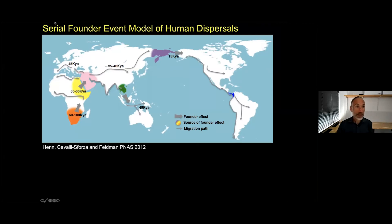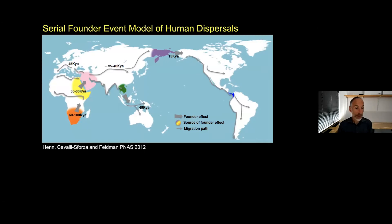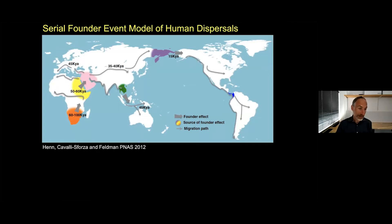I'm going to begin by showing a picture that is the type often shown in studies of human population history. From a paper in 2012, it shows dispersals out of Africa after about 50,000 years ago of a more complex and more deeply divergent population that formed within Africa earlier and spread to different parts of the world. There's a lot that's right about this picture in terms of the spread of people whose ancestry is closely related to Africans — the great majority of non-African ancestry does descend from this dispersal after about 50,000 years ago.